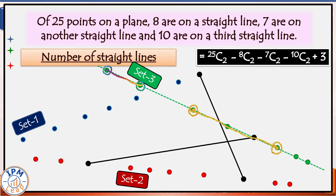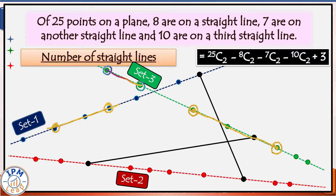Similarly, if I select any two points out of these seven blue points I get the same blue line again and again — this blue line gets counted 7C2 times. Ditto for the third set: selecting any two out of these ten red points gives the same red line, counted 10C2 times. So we subtract these multiple counts, but we must add back 3, one for each of the three actual collinear lines. This expression evaluates to 209.